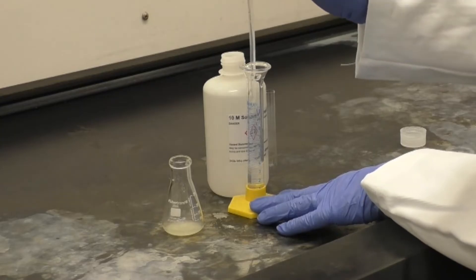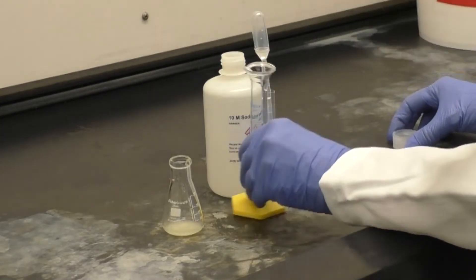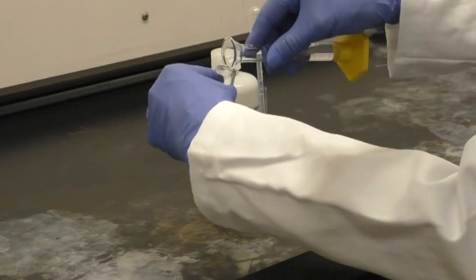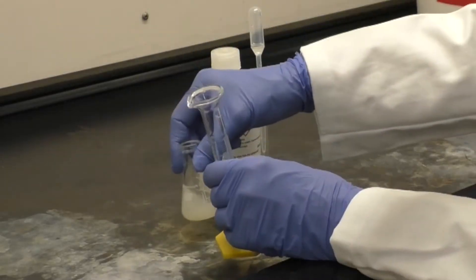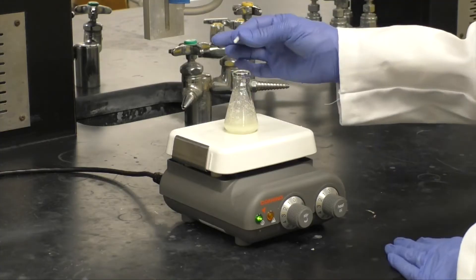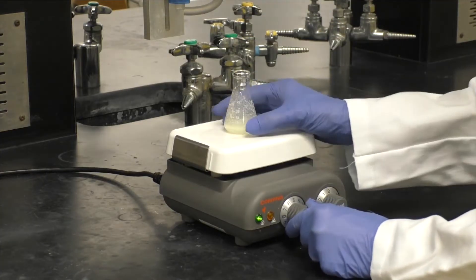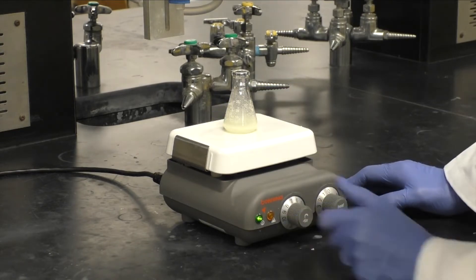Last, measure out 5 milliliters of 10 molar sodium hydroxide and add it to the flask. Put in a stir bar and stir for 20 minutes. A precipitate will form.